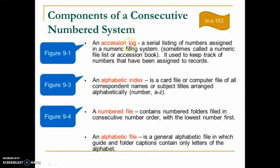You can refer to the textbook on page 152. The accession log is a serial listing of numbers assigned in a numeric filing system. It is also called the numeric filing list or accession book. It is used to keep track of numbers that have been assigned to records in the filing system.